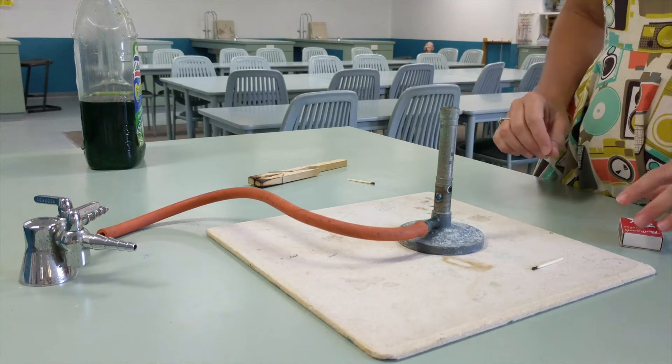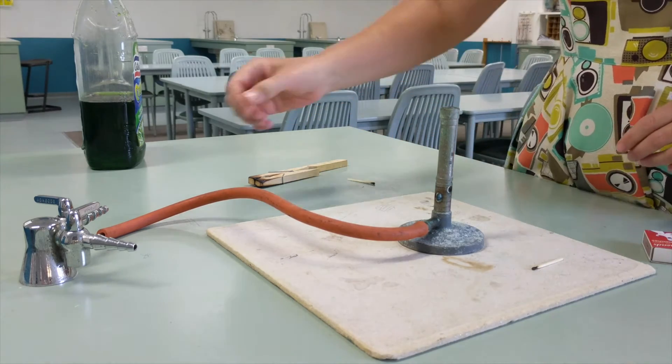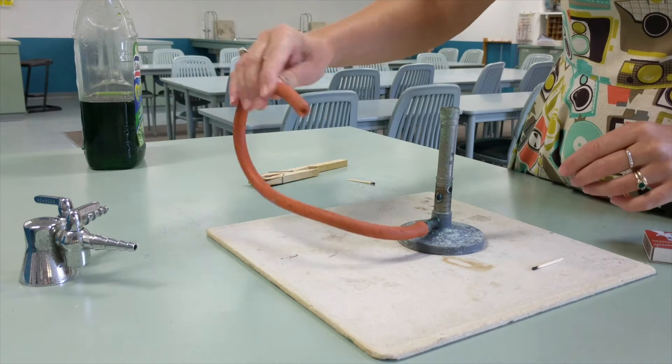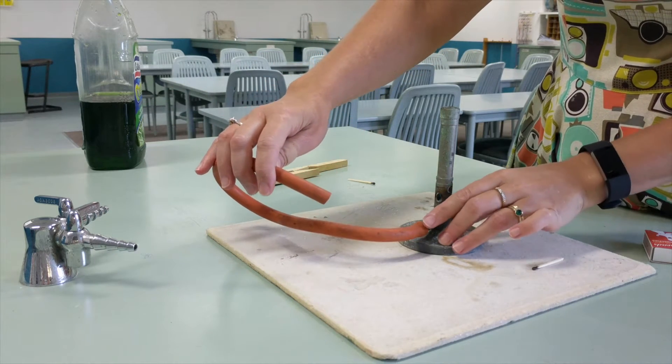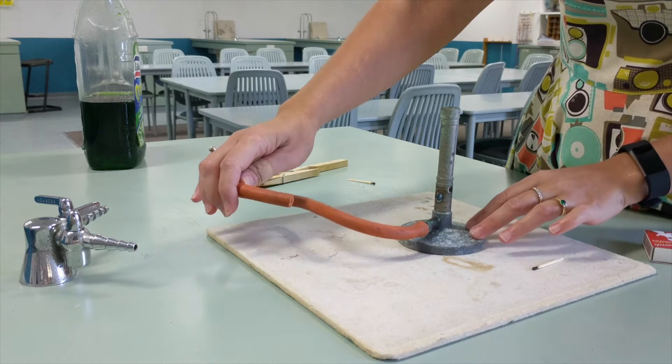I'm going to show you how to light a Bunsen burner. The first thing you need to do is check that there's no damage on the rubber hose. If there's any sign of wear or tear or little holes or perishing, let your teacher know now.